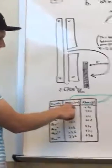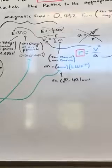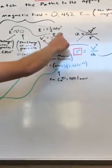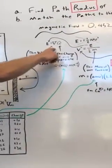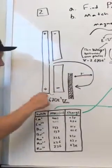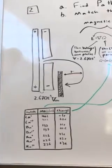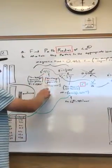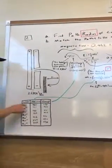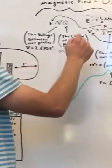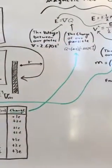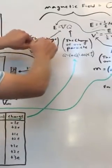Right here we have our atomic mass units, and then we multiply that by the mass of matter. To find our energy, energy is equal to voltage times the charge. Our voltage is the voltage in between our two plates, and that's 2.670. The charge of our particle for calcium is just one, so it's 1.602 times 10 to the negative 19 Coulombs. Then we plug those in, and that gives us our energy.